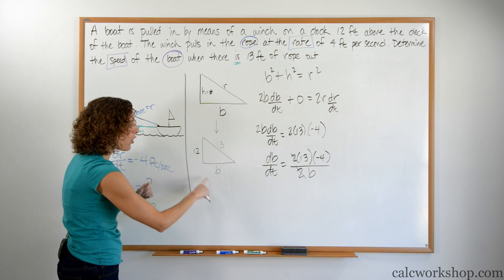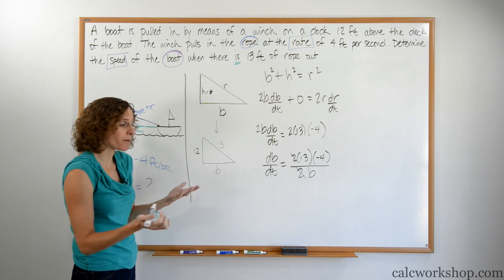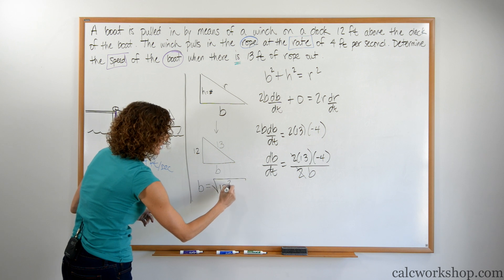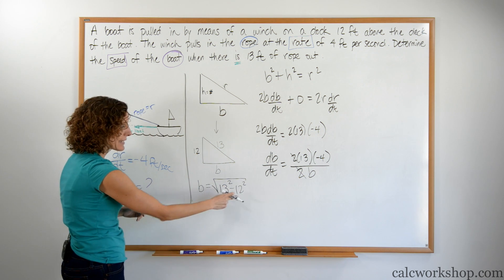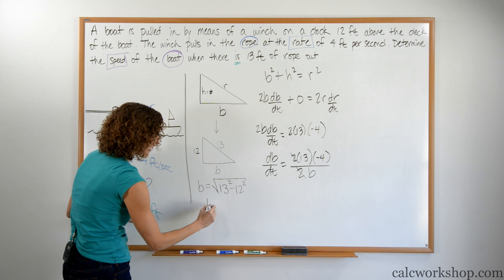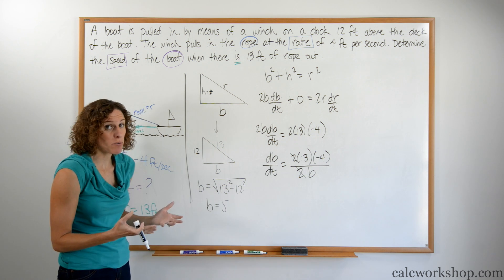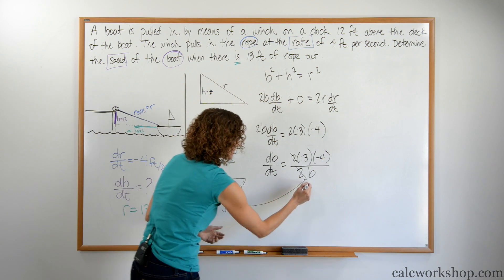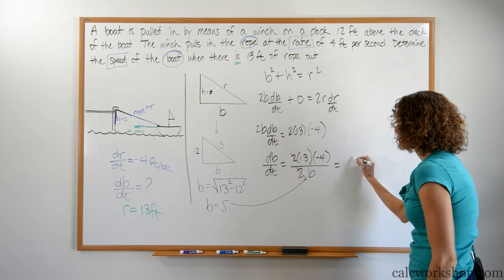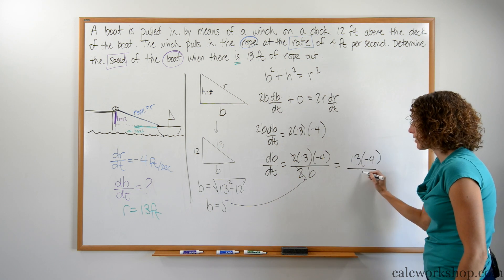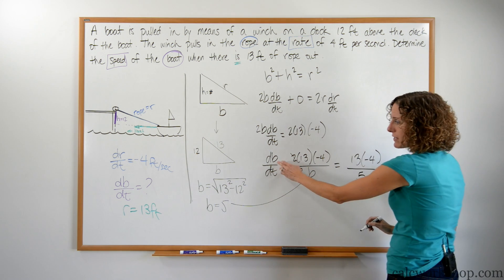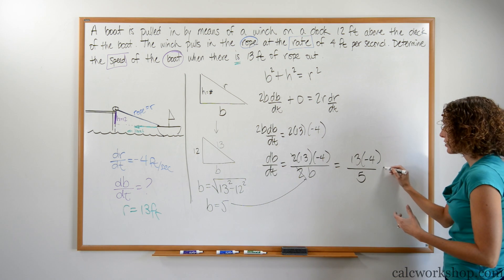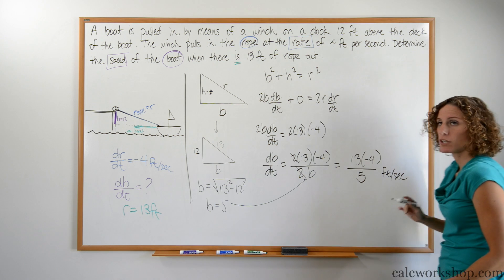We can solve for b using the basic Pythagorean theorem, which means b equals the square root of 13 squared minus 12 squared. 169 minus 144, b is 5. If you don't know that number, just substitute the whole entire expression right in, which means what we have is 13 times negative 4 over 5. Now we're looking at the boat. The boat is a distance traveling. So this would be in terms of feet per second.